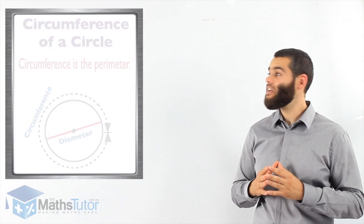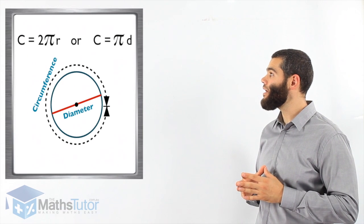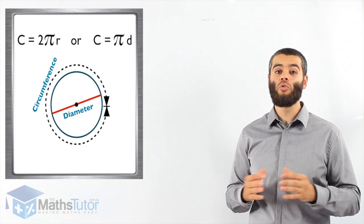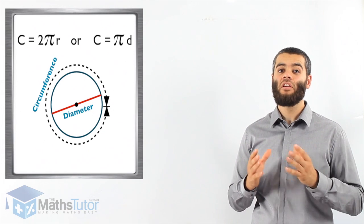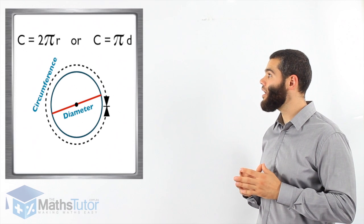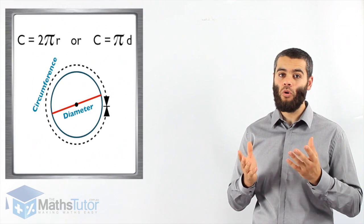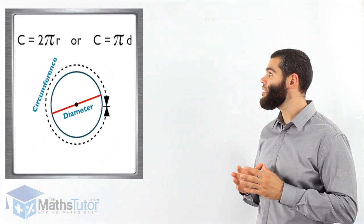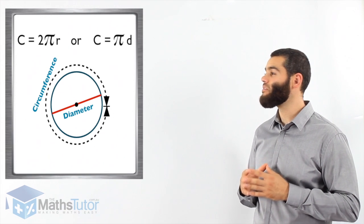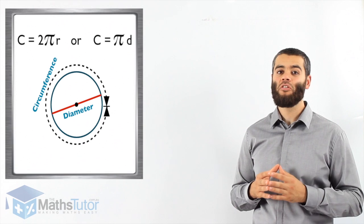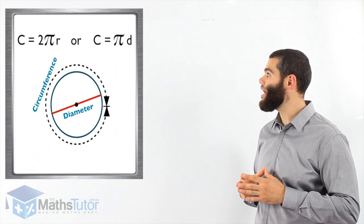The formula is 2πr. C equals 2 times π times r. R is radius. Or another formula, C equals π times d for diameter. You can use C equals 2πr or C equals πd.